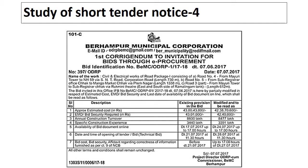The EMD or bid security is modified from 43 lakh 1,000 rupees to be read as 42 lakh 40,000 rupees. The annual construction turnover required is 8,600 lakhs. The specific construction experience required for the contractor is 3,440 lakh rupees, meaning only contractors who have completed work worth 3,440 lakh rupees are eligible for this tender. Availability of bid documents online is up to 17th July 2017 at 17:00 hours. The date of opening of the technical bid is 21st July 2017 at 11:30 hours.